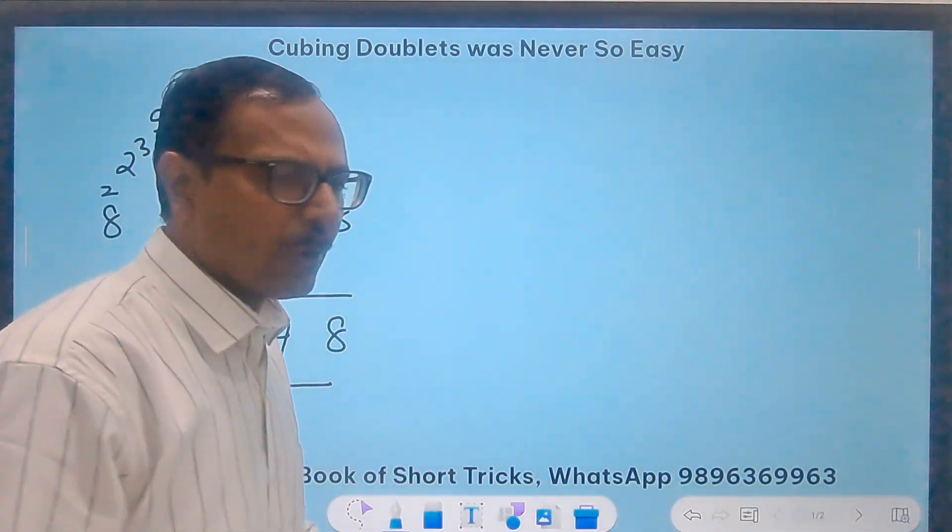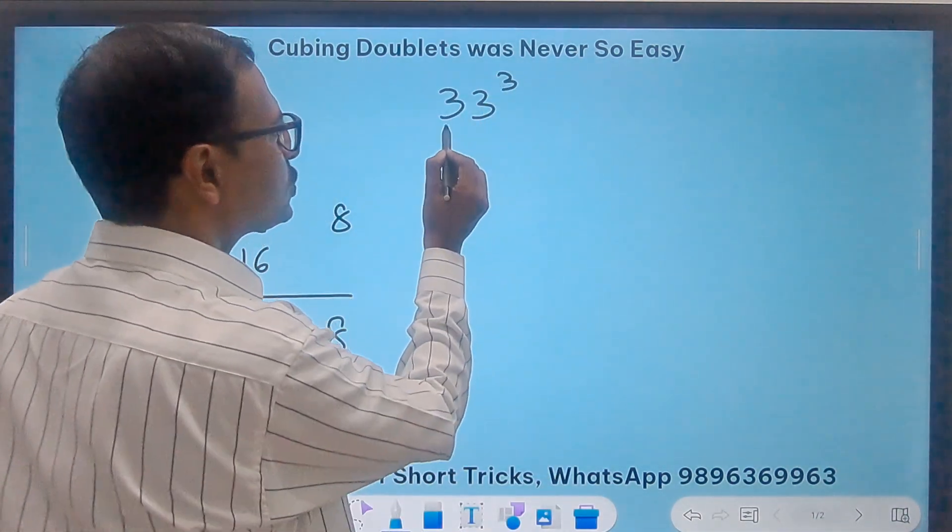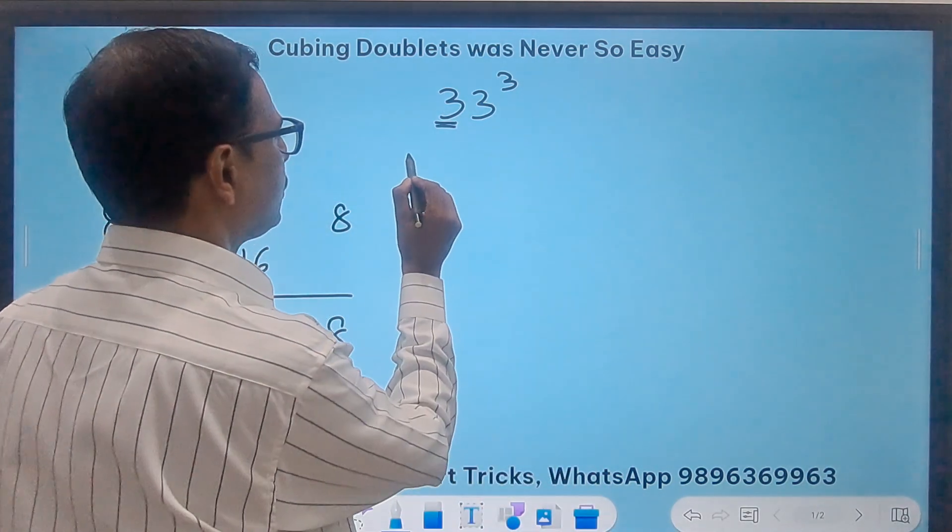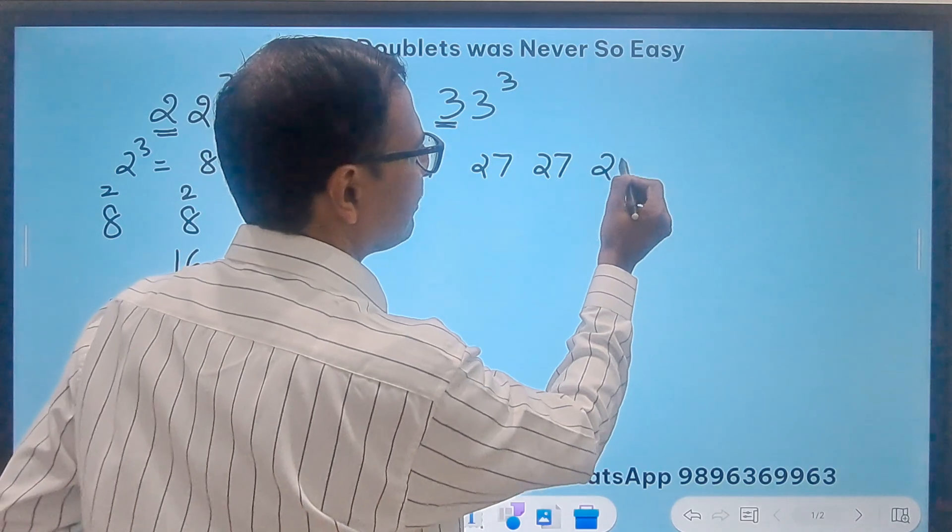Likewise, you can go on and on. Like suppose you need to do 33 cube. So I know 3 cube is 27, right? So I will write 27, 27, 27, 27. Four times.